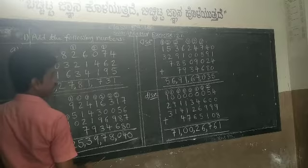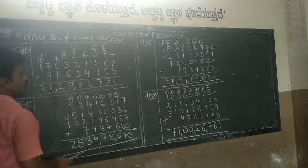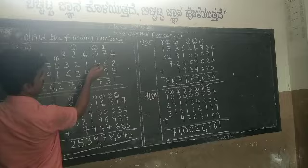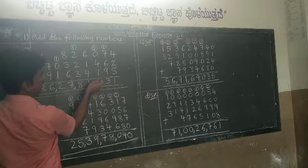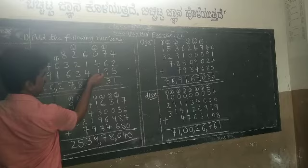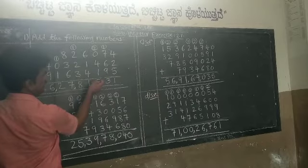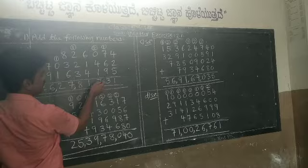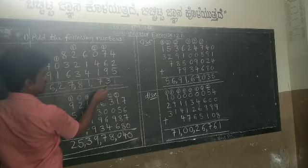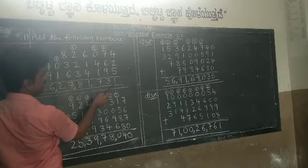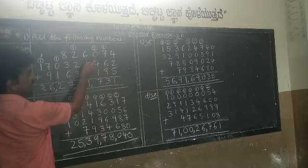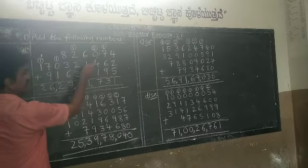Start from the extreme right side — that is the units place. The digits in the units place are 4, 2, and 5. Add these three: 4 plus 2 is 6, 6 plus 5 is 11. Since 11 is a double-digit number, write 1 down and carry 1 to the tens place.